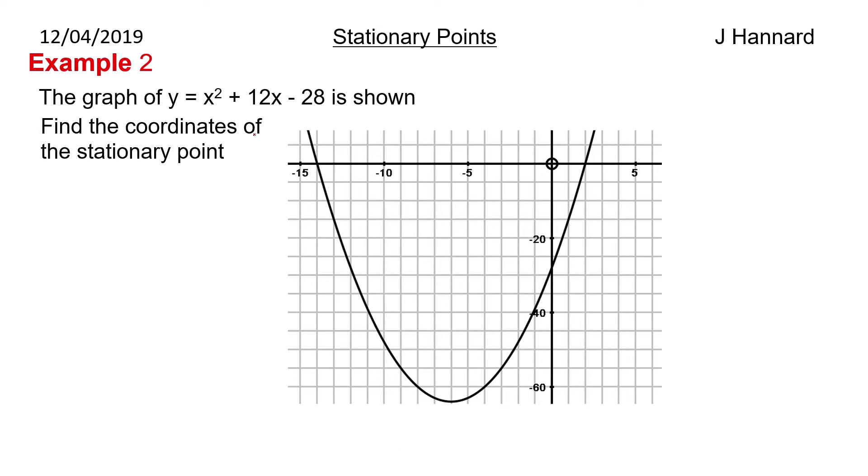Example 2: The graph of y equals x squared plus 12x minus 28 is shown. Find the coordinate of the stationary point of this one. We want that point right there. We differentiate so it's 2x plus 12. That is the gradient. We want our gradient to be 0 so we set it equal to 0 and then we solve for x. So we get x equals minus 6. And to get what y is we stick it back into this equation, so we get y equals 36 minus 72 minus 28, which is equal to minus 64. So that point there is minus 6, minus 64.